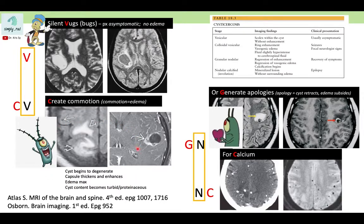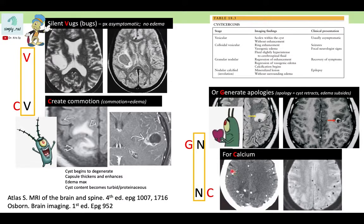In the third stage, granular nodular, there is regression of enhancement and regression of edema, and calcification begins. The mnemonic here is 'generate apologies,' representing cyst retraction and subsiding edema. Finally, in the nodular calcified stage, the body wins and the cyst converts into scattered calcified foci. The full mnemonic is: silent bugs create commotion, generate apologies for calcium.